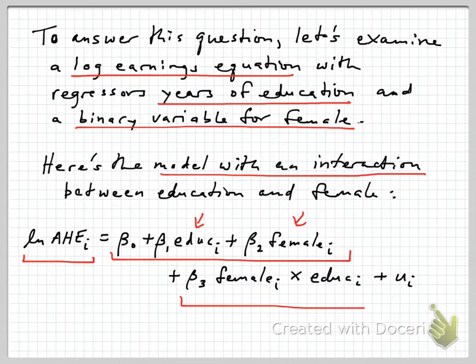But we've added this new term, which is the interaction term. We add a new coefficient, beta 3, and this variable is formed as the product of the female variable times the education variable, and of course we have an error term left over.